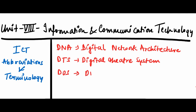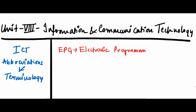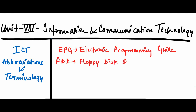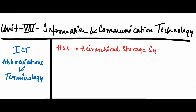DOS stands for Disk Operating System. Next is EPG — Electronic Programming Guide. Next is FDD — Floppy Disk Drive. Another one is HDD — Hard Disk Drive. Next is HSS — Hierarchical Storage System.